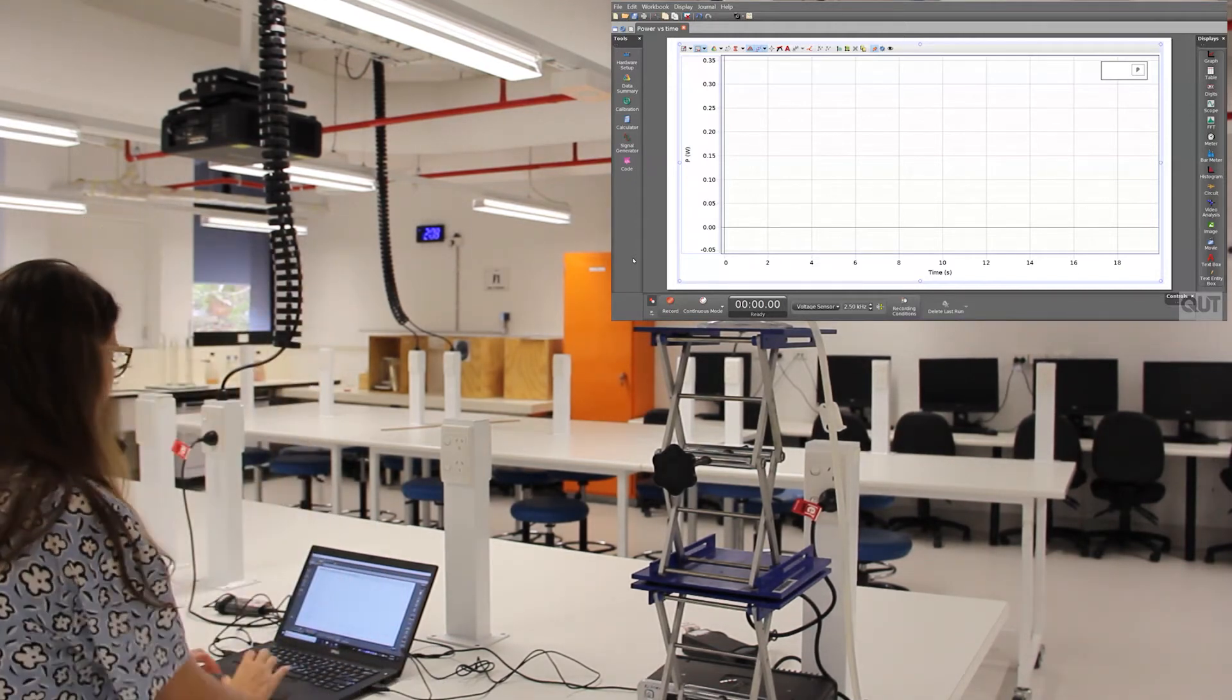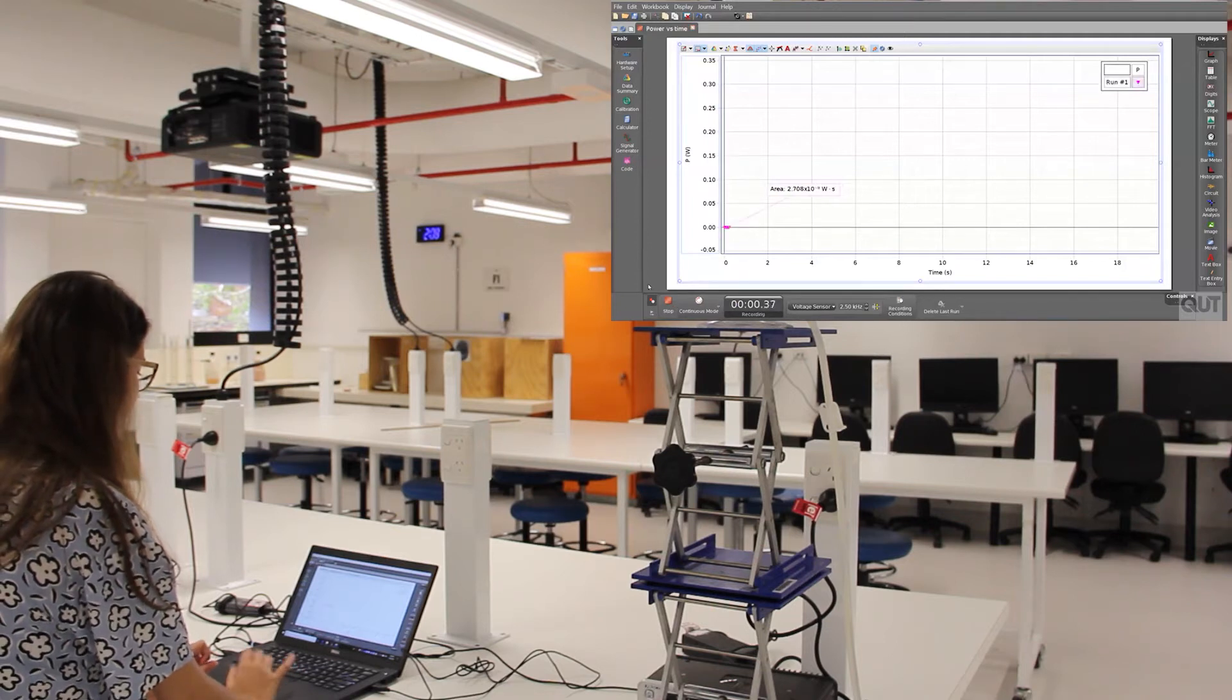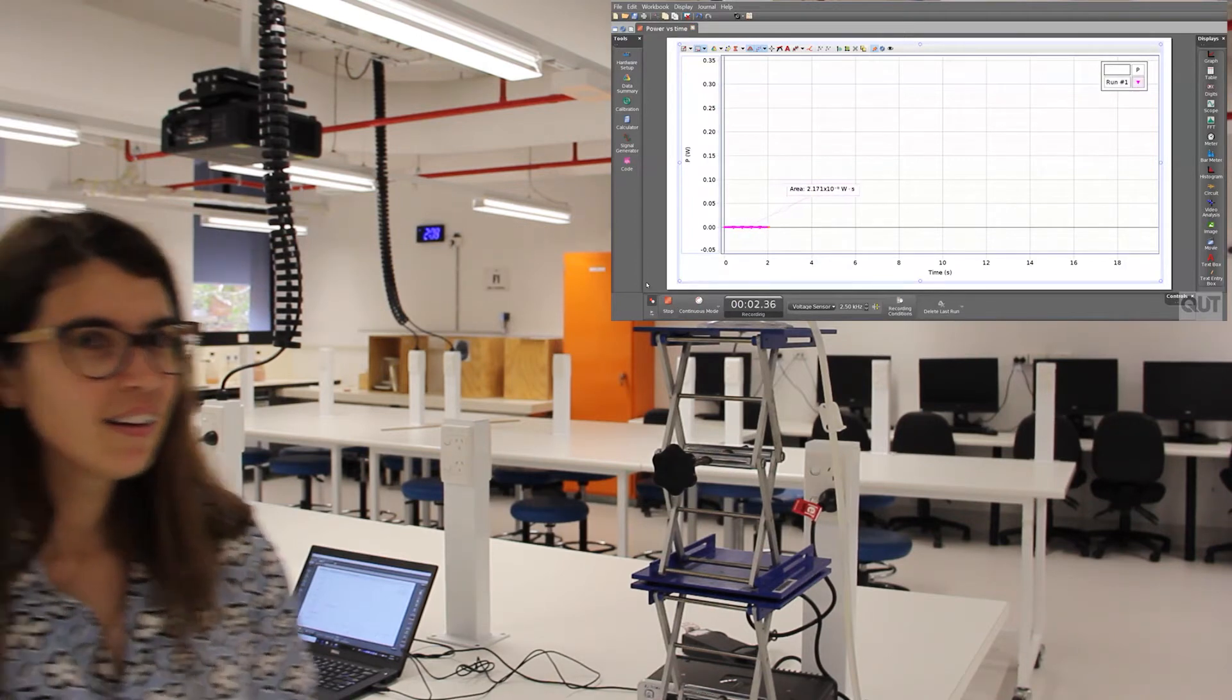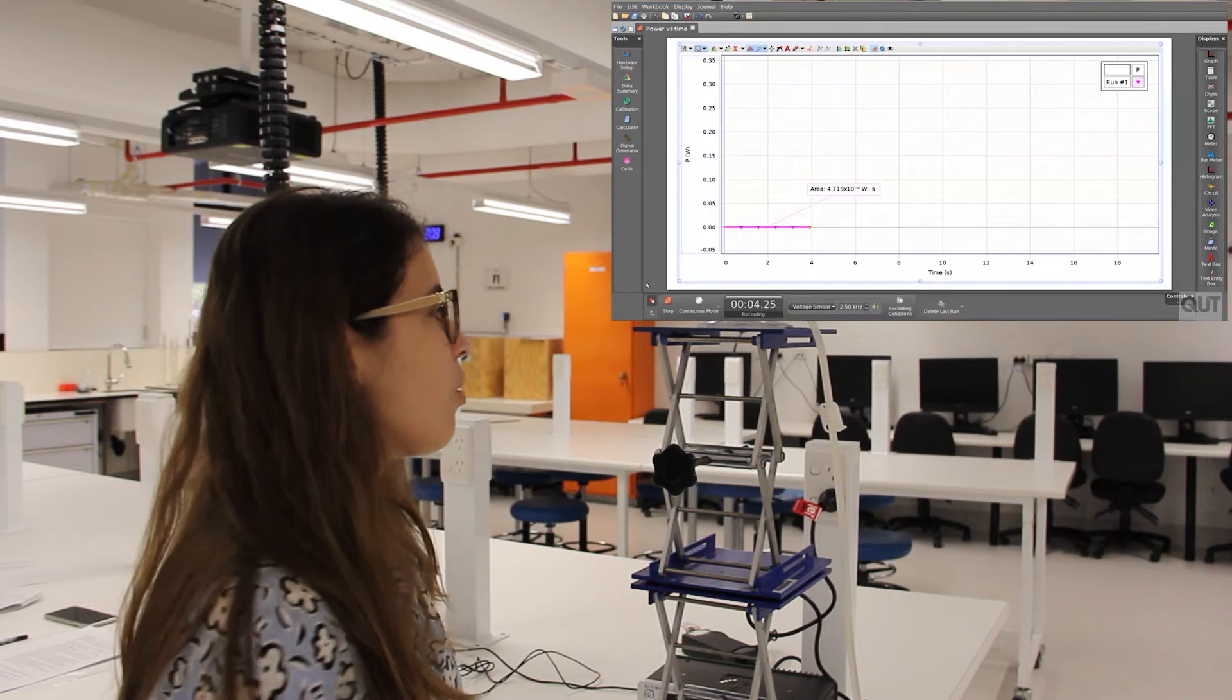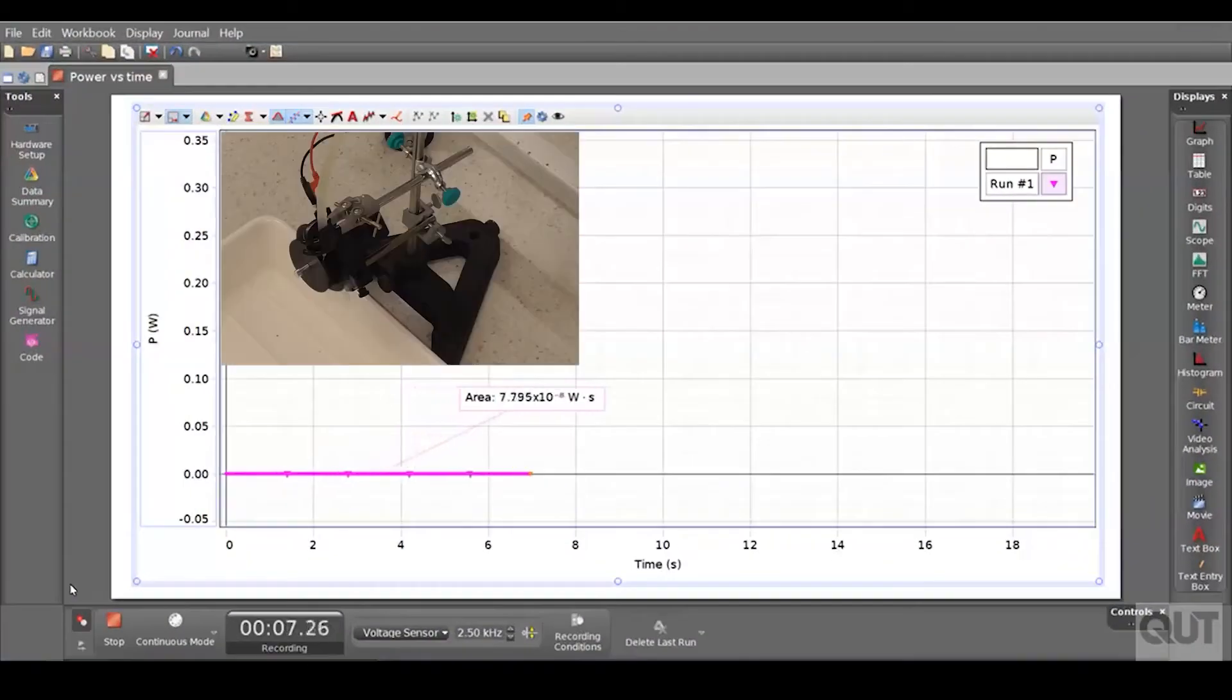First, we have to start recording on the computer. Then we can open the clamp. Water will start flowing. The turbine will start running. And we are going to see the difference in power on the interface.